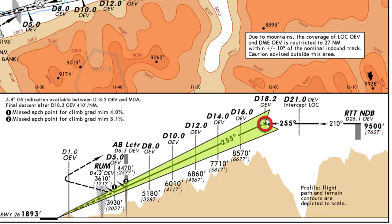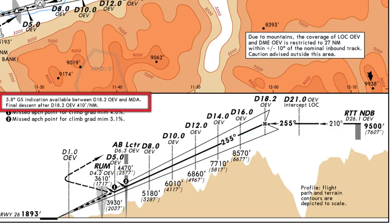Now this is a localizer approach but it also has a glide slope. Even though they don't call it an ILS approach, it does have a glide slope. There are a couple of things to note about this glide slope. First, we don't really need the glide slope to do this approach — we can do it as a step down descent. The approach plate gives us altitudes we need to be at at every two miles. Second, this glide slope has a pitch of 3.8 degrees, almost a full degree more than a standard 3 degree glide slope, which will give us a higher rate of descent.